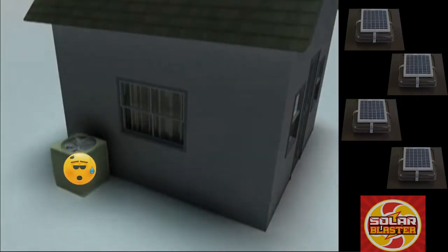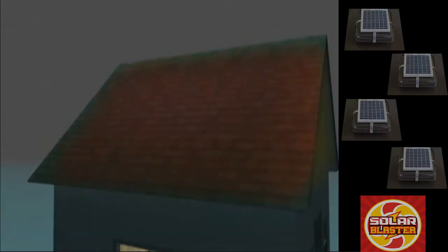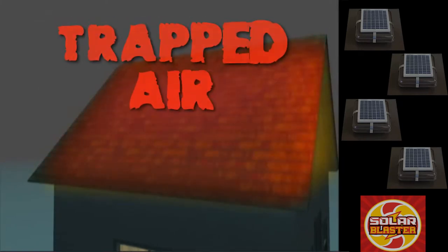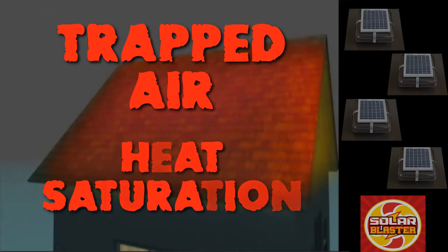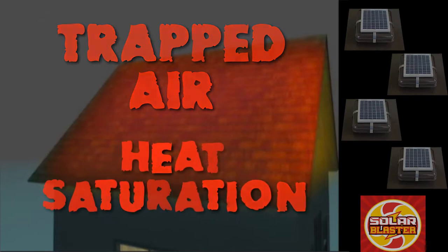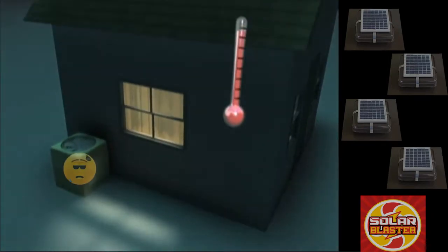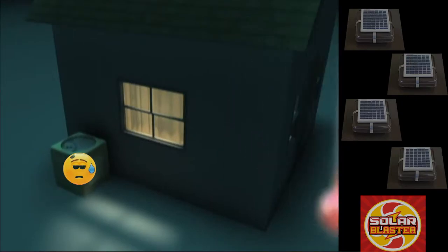As the sun goes down, the outside air becomes cooler. But temperatures remain high in your attic due to the trapped air and heat saturation of your attic's insulation. This is why even as the temperature outside gets cooler, your air conditioner continues to run hard long into the evening.